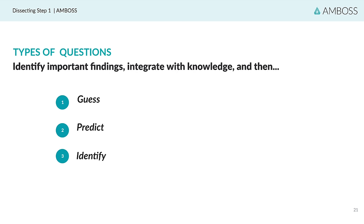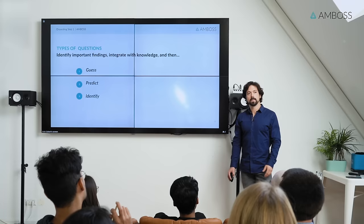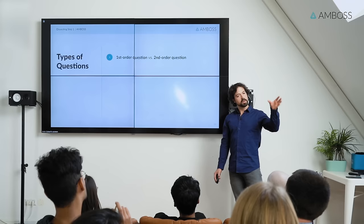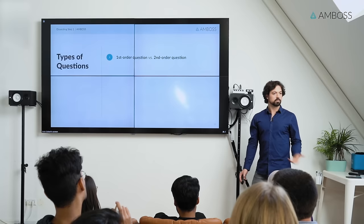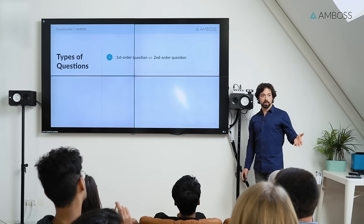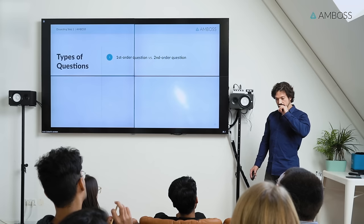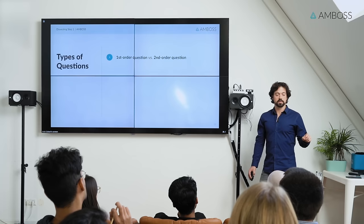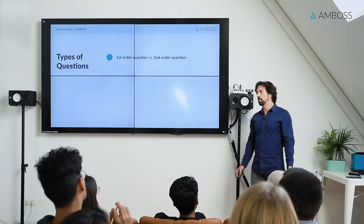You need to identify the important findings in the stem, integrate that with your knowledge, and then you're given an assignment — a drug, a behavior, a diet. Or maybe the question asks you to predict: what other findings would you expect with this patient? Or maybe you have to identify the diagnosis or underlying pathology. There are also first-order and second-order questions. A first-order question is straightforward — what's the diagnosis? A second-order question involves an intermediate step: you're given a scenario, not told the diagnosis, and asked about pathophysiology or treatment. You must figure out the diagnosis first, then answer.